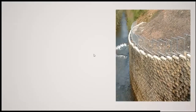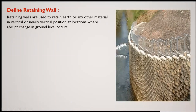The definition of a retaining wall: retaining walls are walls which are used to retain earth or any other material in a vertical or nearly vertical position at locations where there are changes in ground level. Where the ground level is changing, there may be backfill that needs to be supported. You may find retaining walls in mountainous regions near roads, road networks, or near river areas.